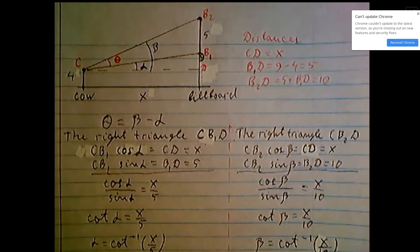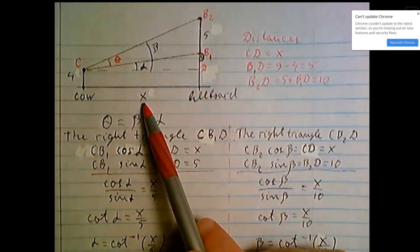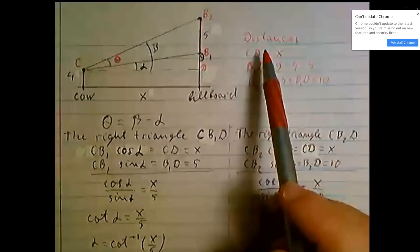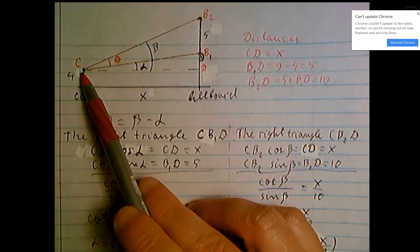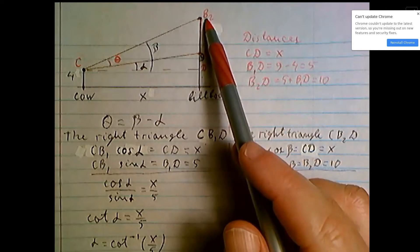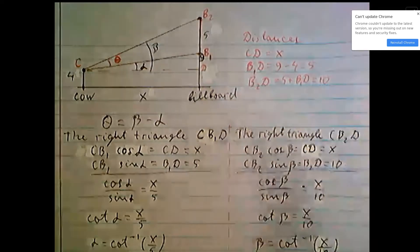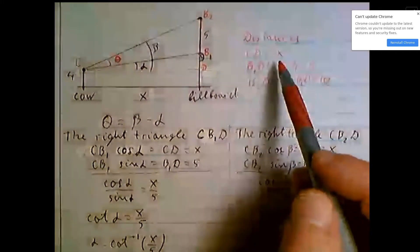How to express theta, angle theta, from the distance x? By geometry, some distances. Let's point C be the location of the cow's eyes, billboard bottom B1, top point B2. And let's draw the parallel line to ground CD. Distance CD is the same as distance x.